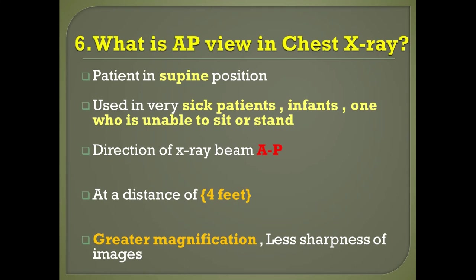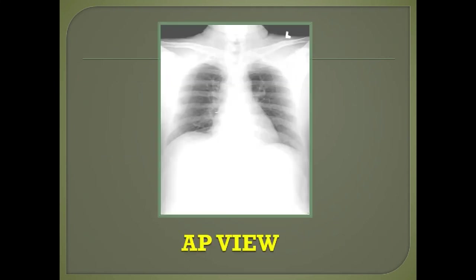Question number six: what is the AP view in chest X-ray? It is taken in the supine position for very sick patients, infants, and those unable to sit or stand. The direction of the beam is from anterior to posterior. It should be taken at a distance of at least four feet. There will be greater magnification and less sharpness because of the shorter distance, so the heart will look enlarged.